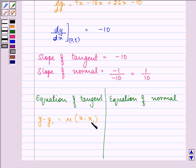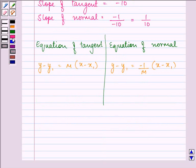And equation of normal is y minus y1 equal to minus 1 upon m times (x minus x1). Now what we need to do is we will be substituting the values.